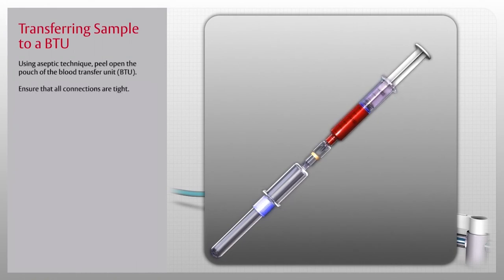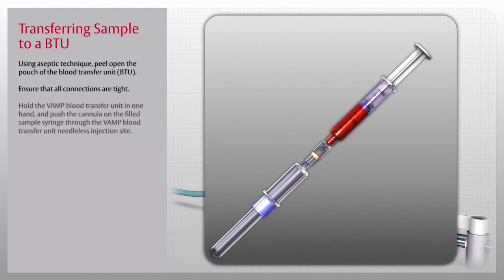Ensure that all connections are tight. Hold the Vamp blood transfer unit in one hand and push the cannula on the filled sample syringe through the Vamp blood transfer unit needleless injection site.